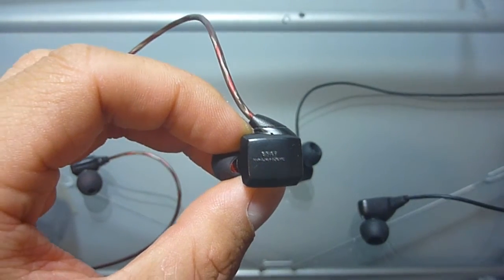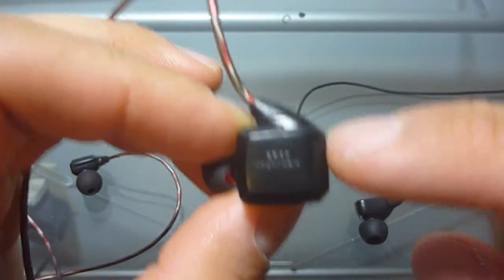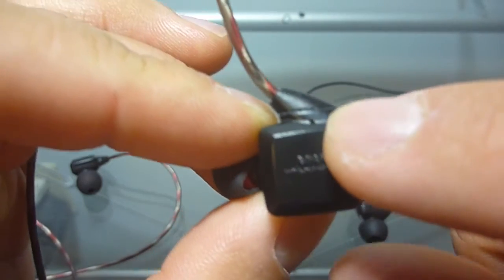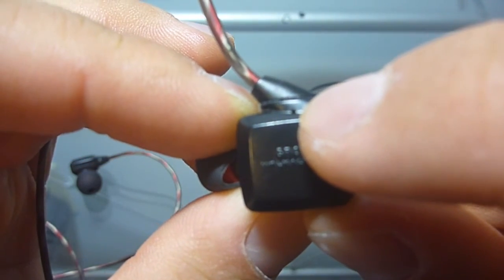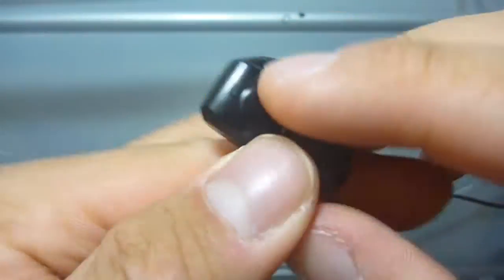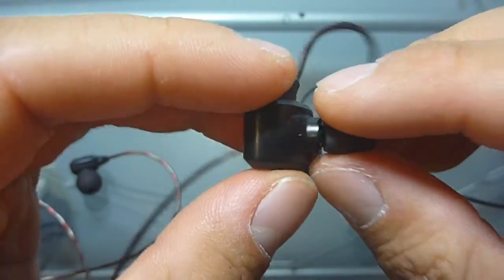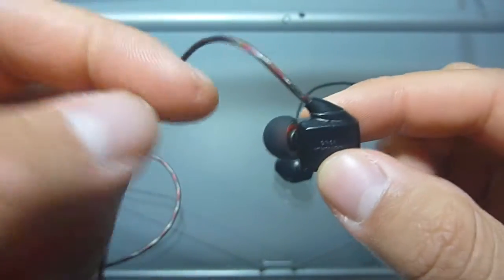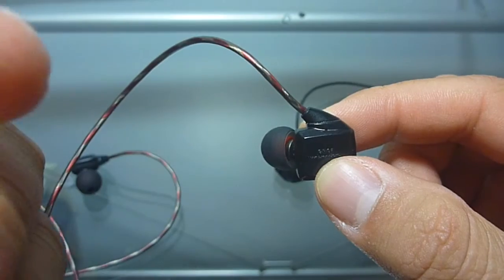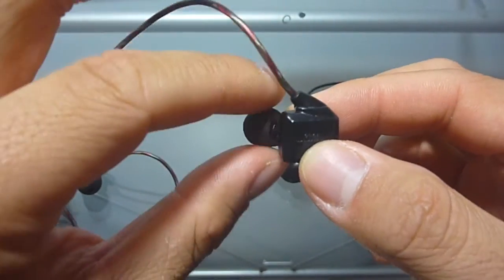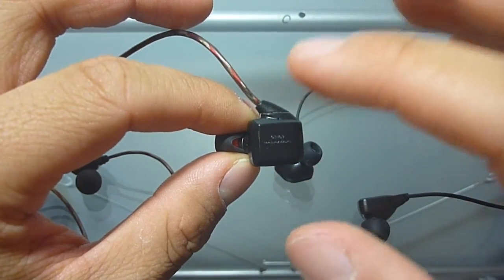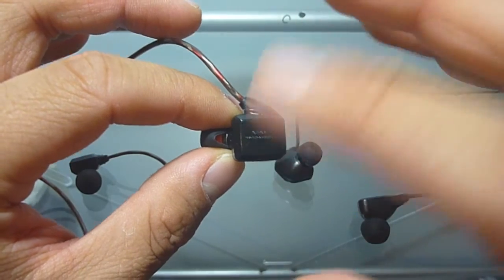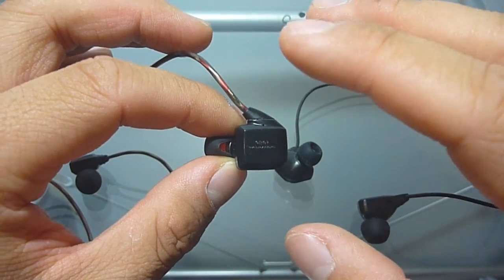Now in terms of isolation, taking a look at the GR07s first of all. So if the camera can focus, you can see here there is a ported design. So there's one port here and another port here. So having these ports means that more noise can come in and more noise can leak out. So in terms of isolation, the GR07 does suffer in this regard.